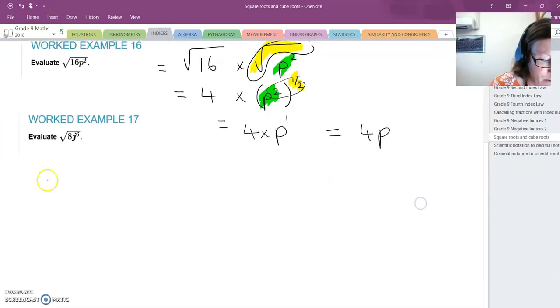Let's look at our next worked example. The square root—sorry, this should have a cube there. Not sure why that didn't come through. So the cube root of 8j to the power of 6. We could say this is the same as saying the cube root of 8 and the cube root of j to the power of 6.